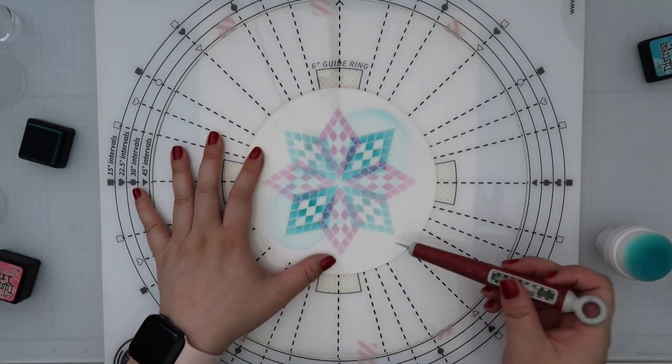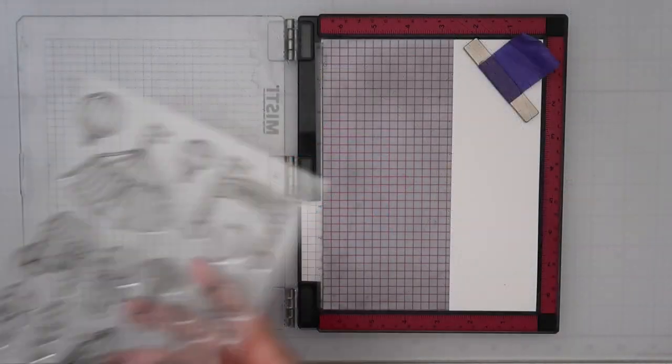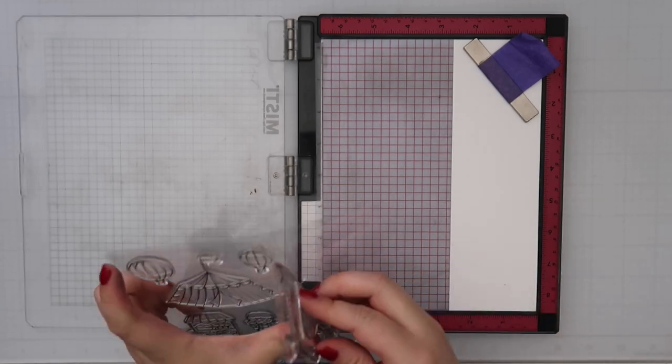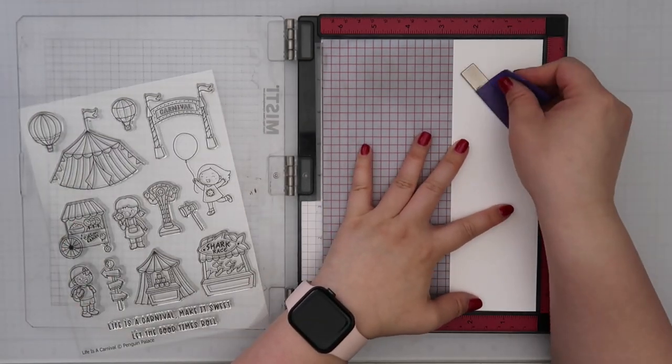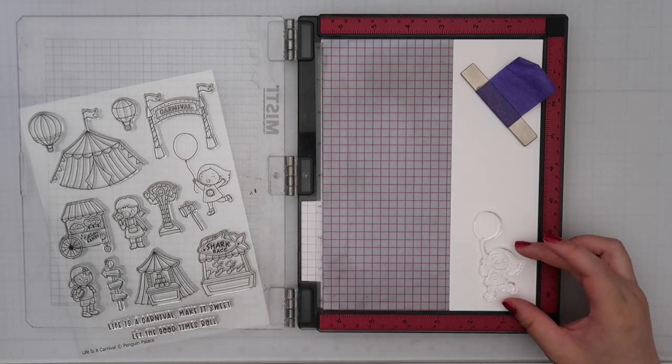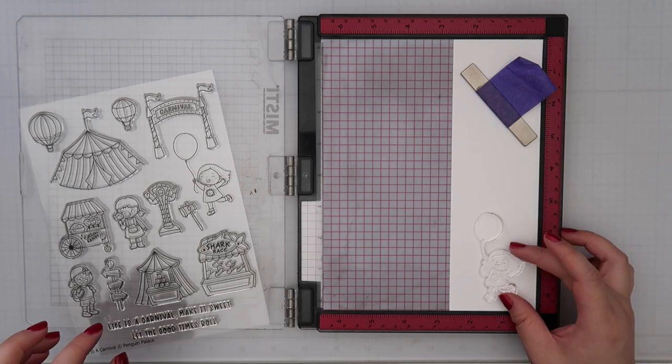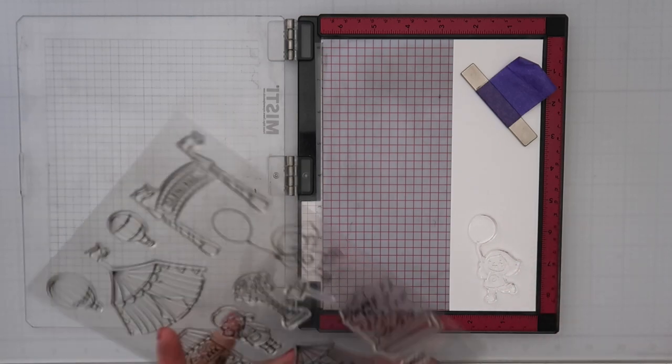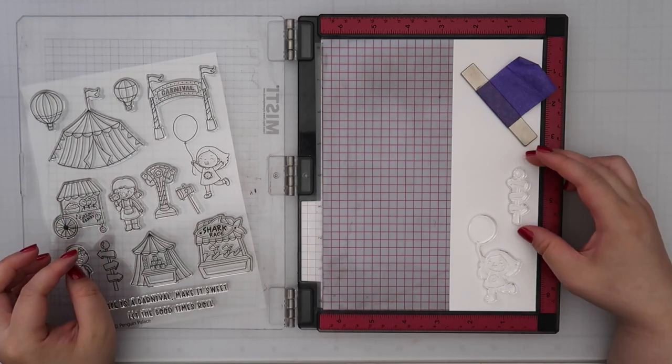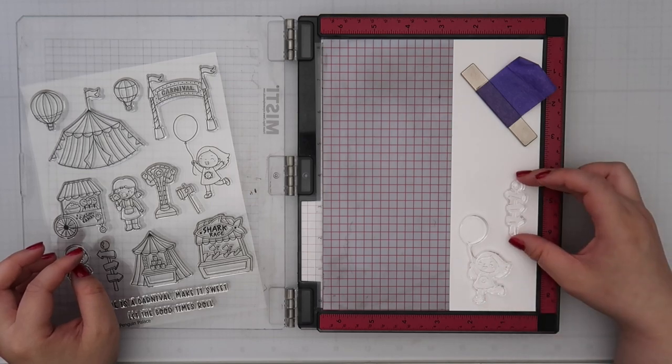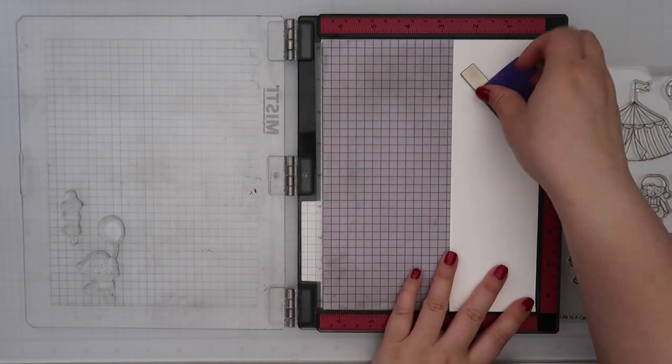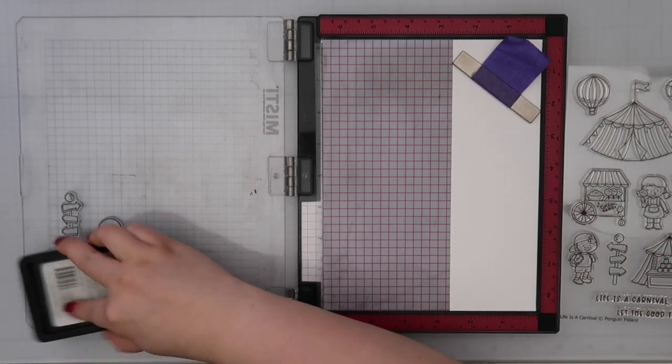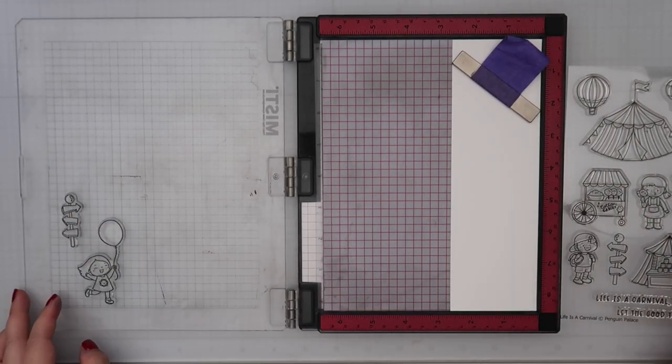For the stamping itself, it is Life is a Carnival and this is so cute because it has so many different images that's perfect for a shaker card, which I plan to do soon with this stamp set. It's perfect for the summer especially since the county fairs are opening. But I opted only to use two of the images which is the girl with the balloon and the signs for like where to go.